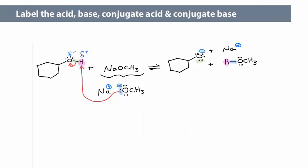The next thing we can do is identify the acid, base, conjugate acid, and conjugate base, using the Bronsted definition. In the starting materials, the proton donor is the acid, and the proton acceptor is the base.